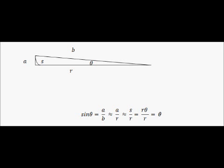If you imagine that instead of a triangle we actually have the sector of a circle, and the arc of this circle is given by s, we can do a further approximation. We can see that a over r is approximately equal to s over r, because the circle is so big that it's effectively the same. We know from circle theorems that s is equal to r theta, so we substitute that in: s over r goes to r theta over r, the r's cancel, and we're left with theta. So for very small angles, sine theta is approximately equal to theta.